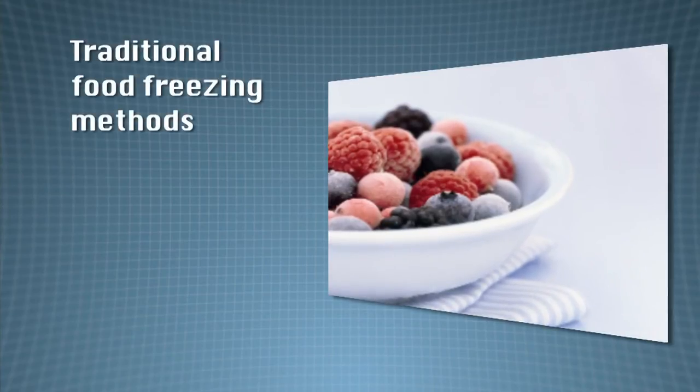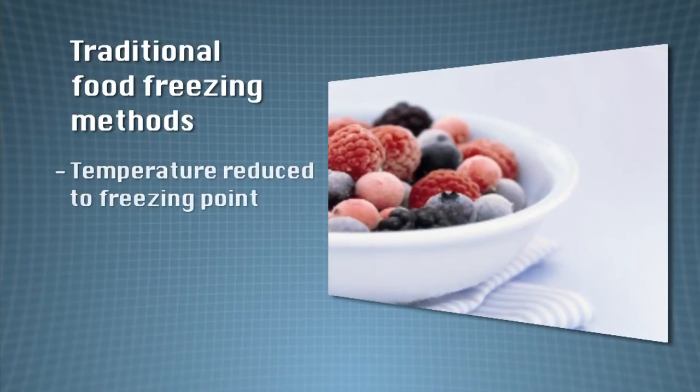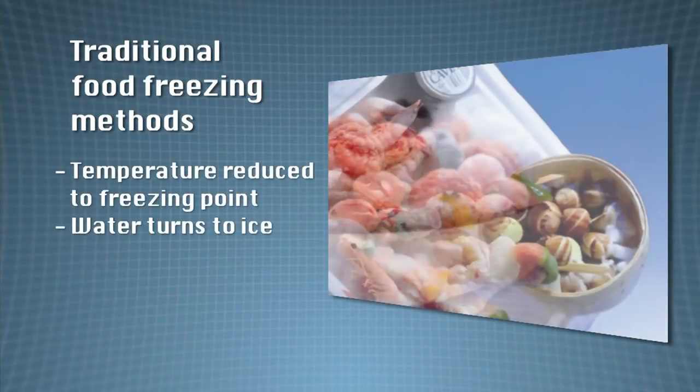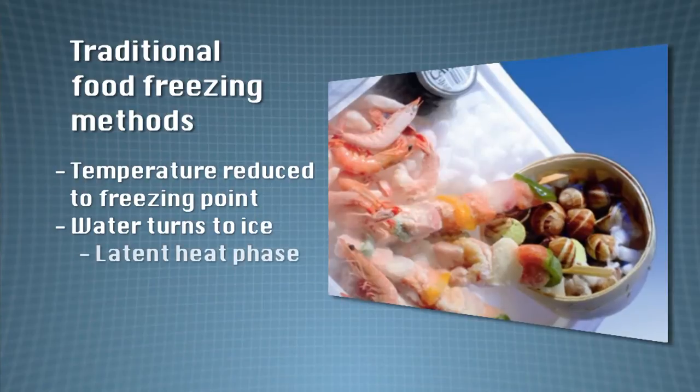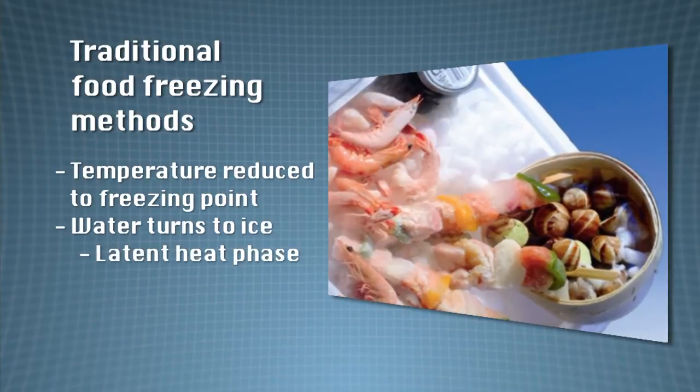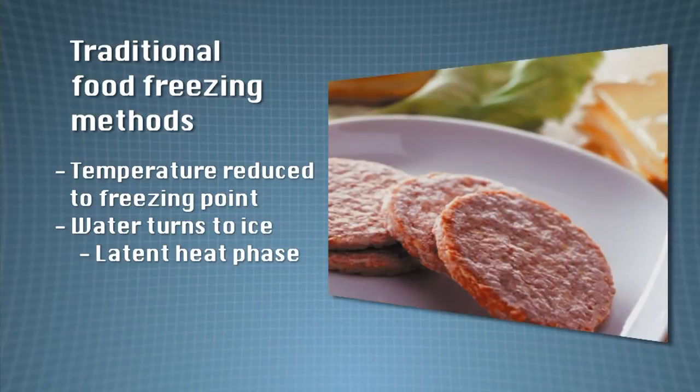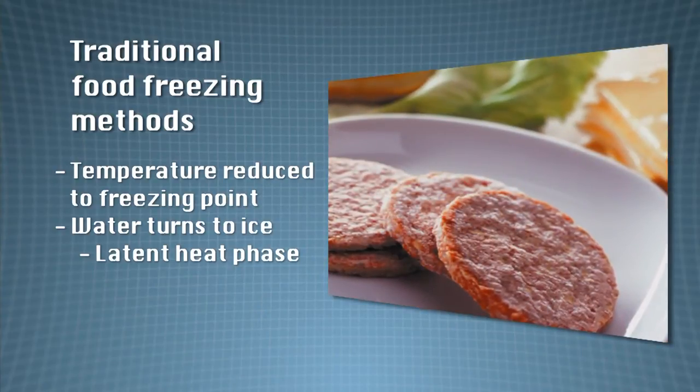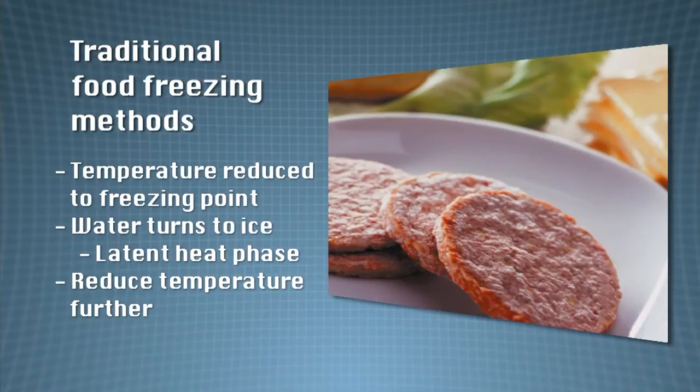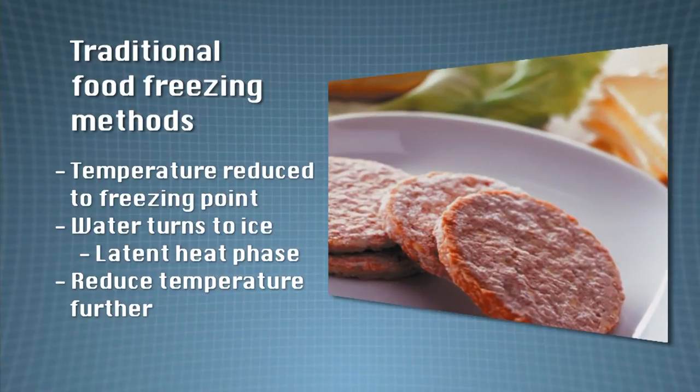Traditional freezing of food occurs in a three-step process. First, the temperature is reduced to the freezing point. The water in the food stuff then turns to ice. This is called the latent heat phase. Latent heat is changing the state or phase of a substance, the food, without changing the temperature. The third step is to reduce the temperature further, usually to about minus 18 degrees centigrade.